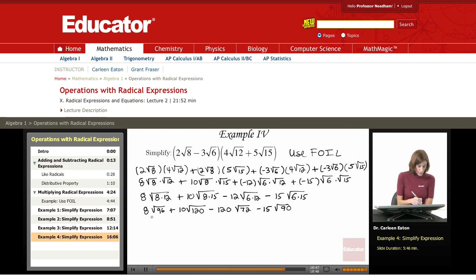Let's factor out the perfect squares. 96 is the product of 16 and 6. 120 can be rewritten as the product of 4 and 30. 72 is the product of 36 times 2, and 90 is the product of 9 times 10.